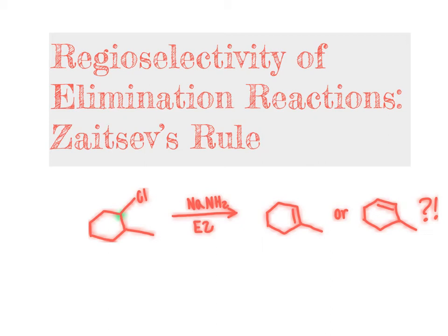This segment focuses on understanding the regioselectivity of elimination reactions using Zaitsev's rule. By the end of this segment, you should understand what each of these terms mean and how to apply them toward problems. The term regioselectivity refers to a reaction where there are multiple constitutional isomer products that hypothetically could be formed, but in actuality, only some or one of those is preferred over the other. The reaction is selecting or choosing a preferred constitutional isomer product.